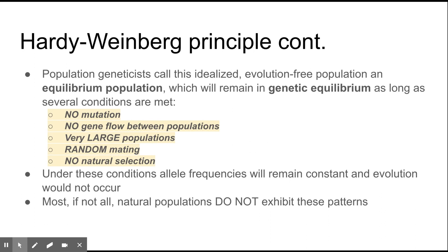Moving on from allele frequency, evolution is nothing more or less than a change in the genetic population over multiple generations. We're not going to see evolution and speciation in one generation — it takes time to pass these traits down. Due to selective pressures, only certain alleles have an advantage and higher fitness, and those organisms will survive more. It's really the genetic makeup of these populations being passed down.